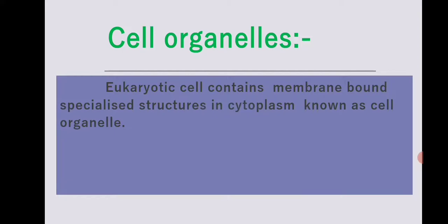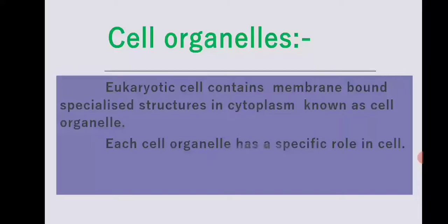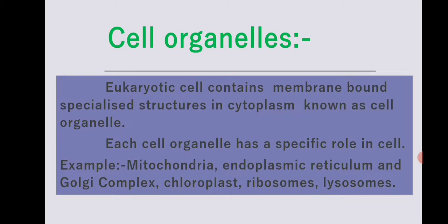Eukaryotic cells are associated with the cytoplasm, and the cell organelles are present in the cytoplasm. Eukaryotic cells contain membrane-bound specialized structures in the cytoplasm known as cell organelles. Each cell organelle has a specific function and a specific role in the cell.